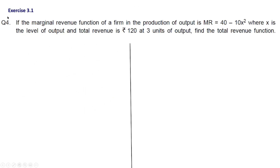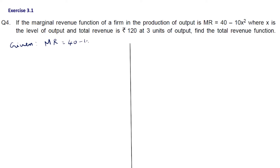Moving on to the exercise question from the CBC handbook, Exercise 3.1 question number 4. If the marginal revenue function of a firm is MR = 40 - 10x², where x is the level of output and total revenue is rupees 120 at 3 units of output, find the total revenue function. The marginal revenue function and the total revenue at 3 units are given; we need to find the total revenue function. So, MR = 40 - 10x².